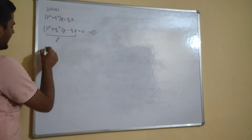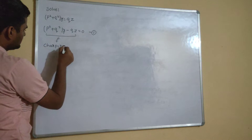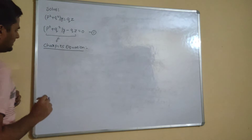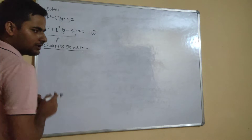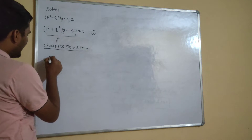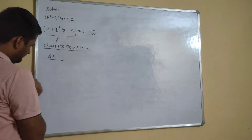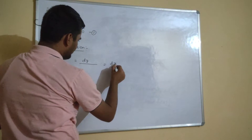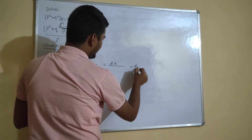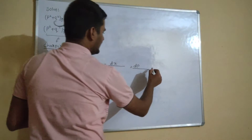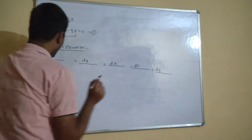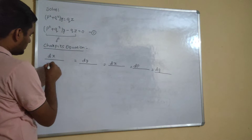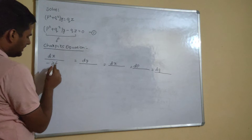Now we have to write Charpitt's equation, which is the most important part of the question apart from the integration portion. The structure is: dx divided by something equals dy divided by something equals dz divided by something equals dp divided by something equals dq divided by something. In the numerators you will always get del f, so here del f by del p.